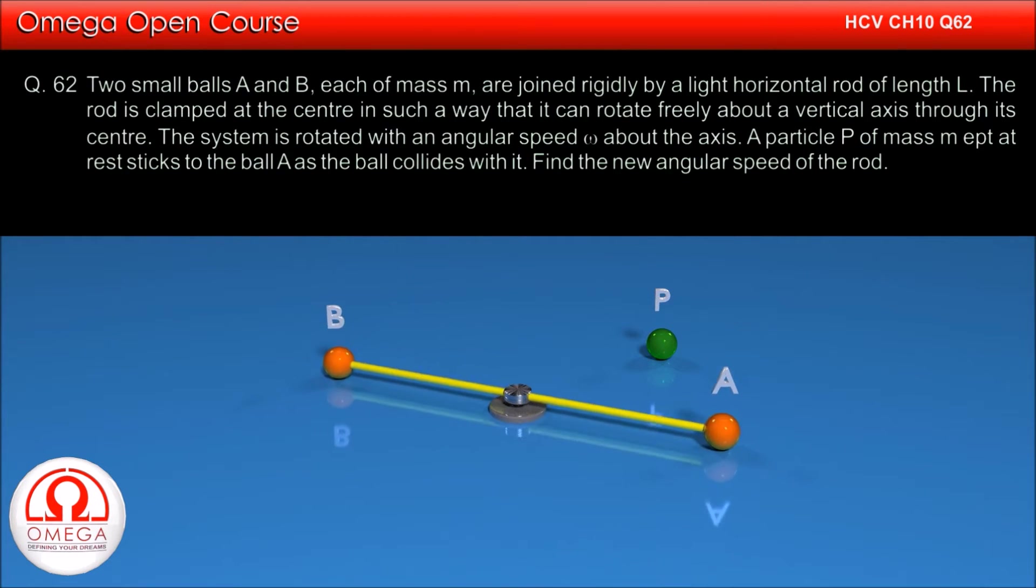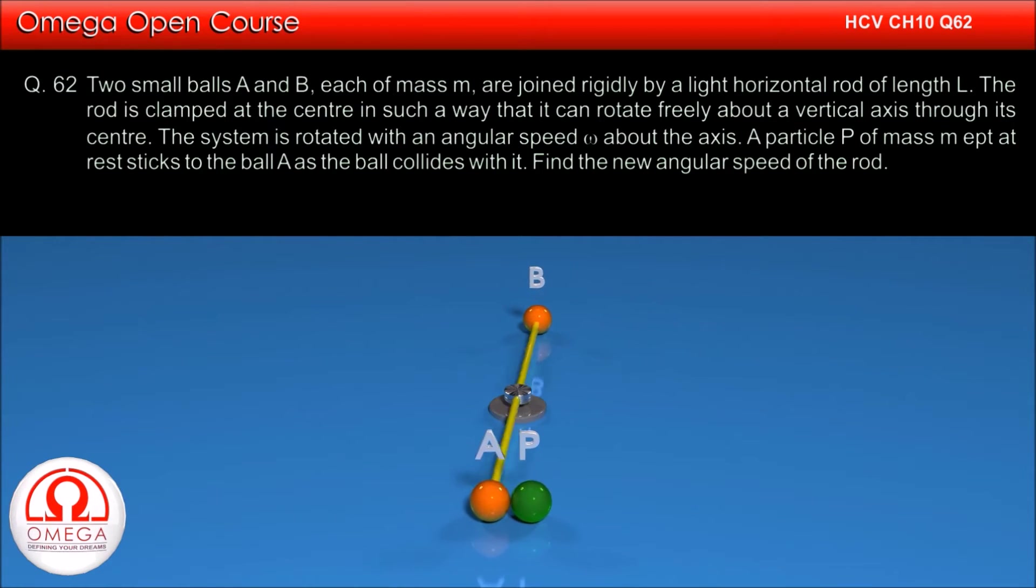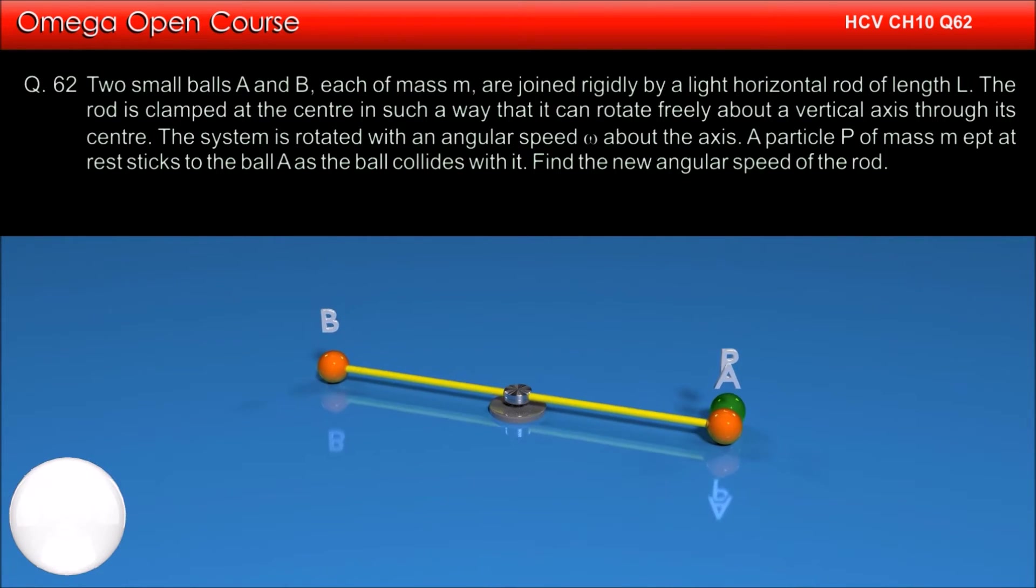The system is rotated with an angular speed omega about the axis. A particle P of mass M kept at rest sticks to the ball A as the ball collides with it. Find the new angular speed of the rod.